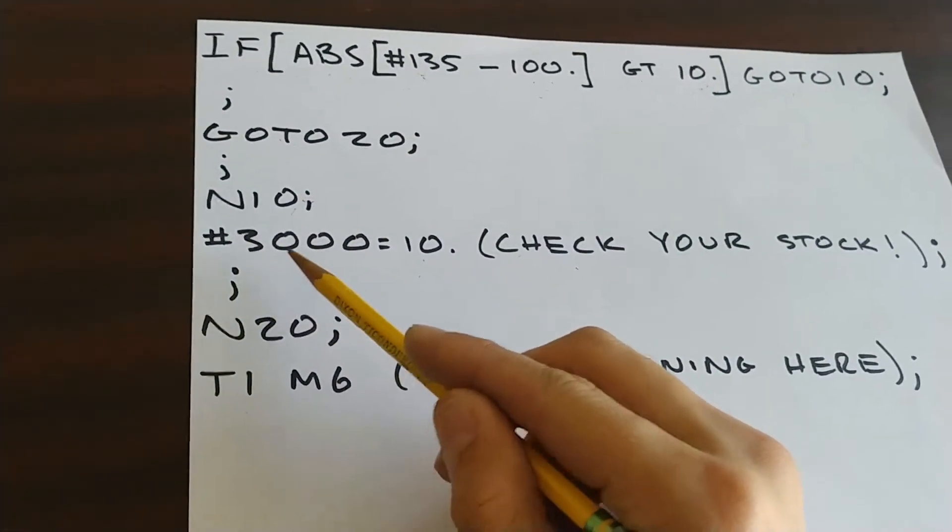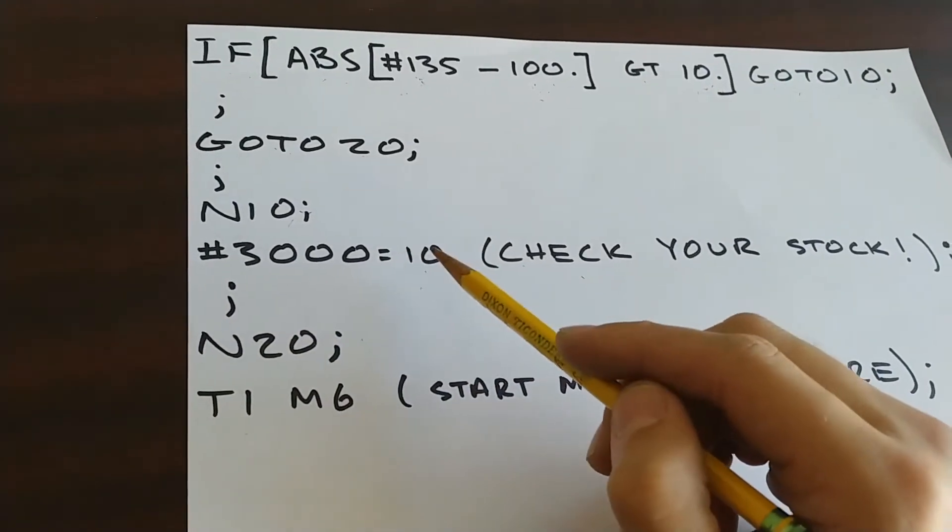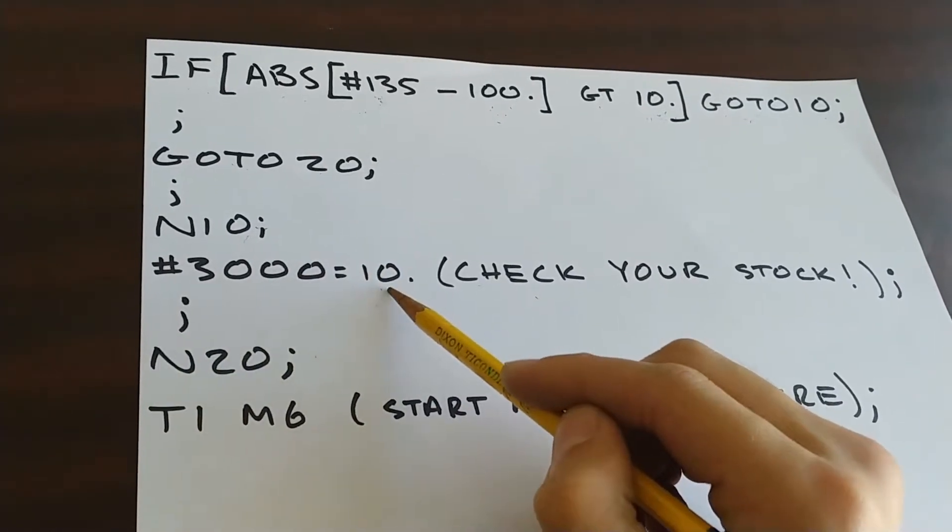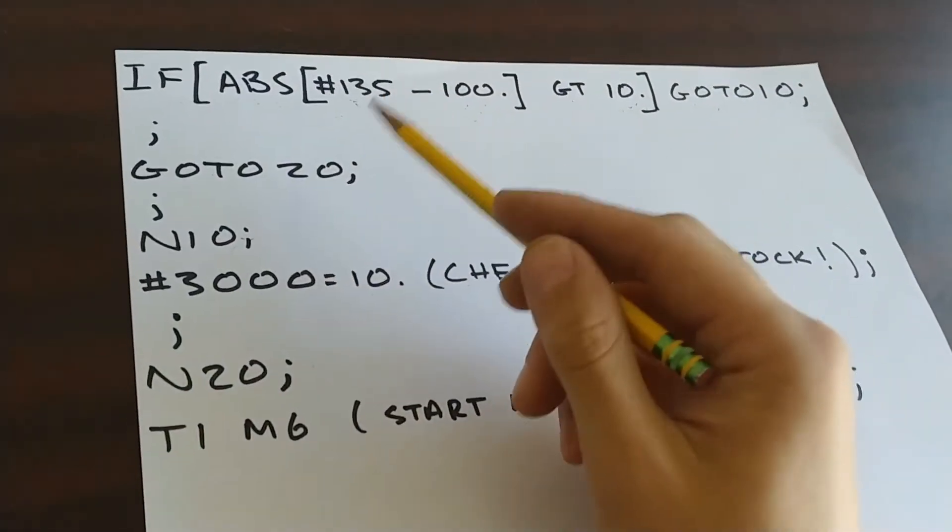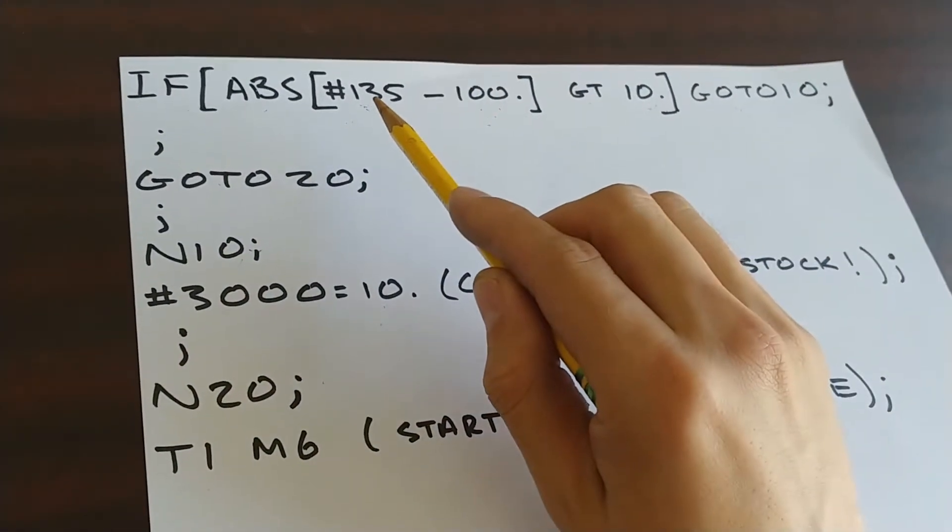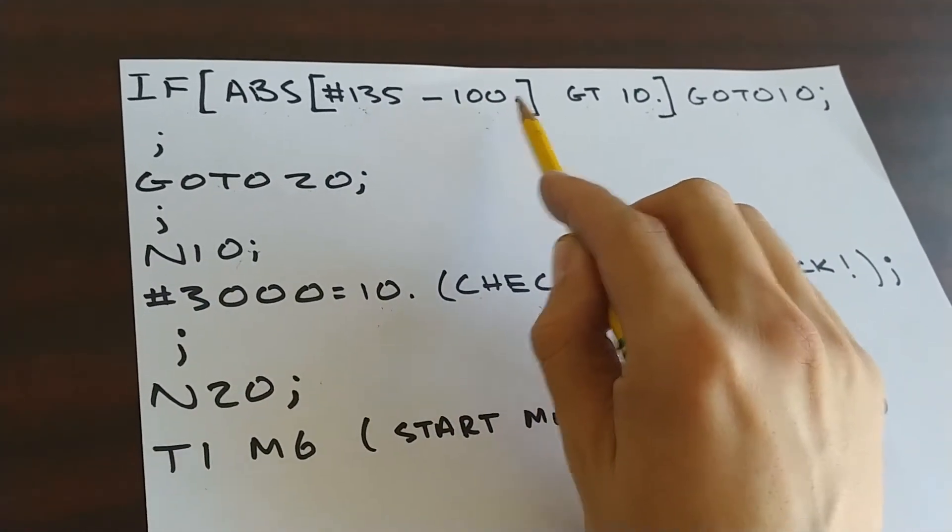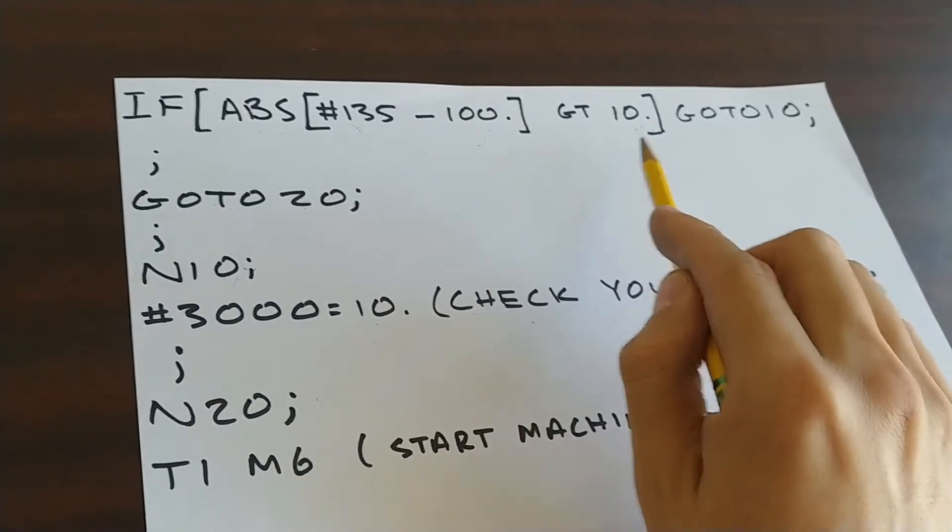Right here, pound 3000, that's the alarm code to make custom alarms. So all you need to do is set pound 3000 to any number you choose and put the alarm message in here. So if it fails this, if this is not true, which means the measured side of the stock is within plus or minus 10 of 100, we don't do this and the program will just continue going like nothing happened.